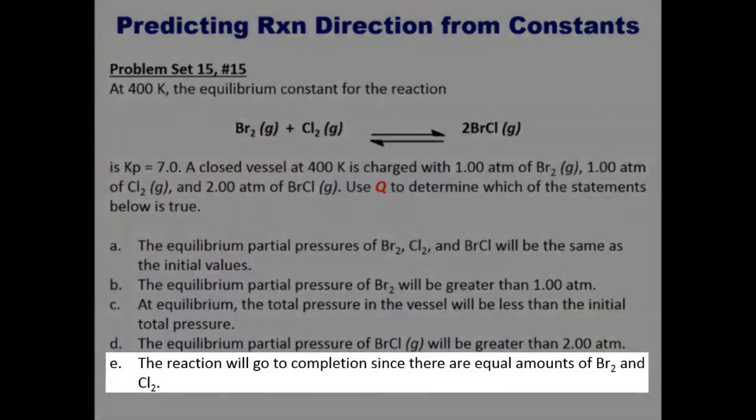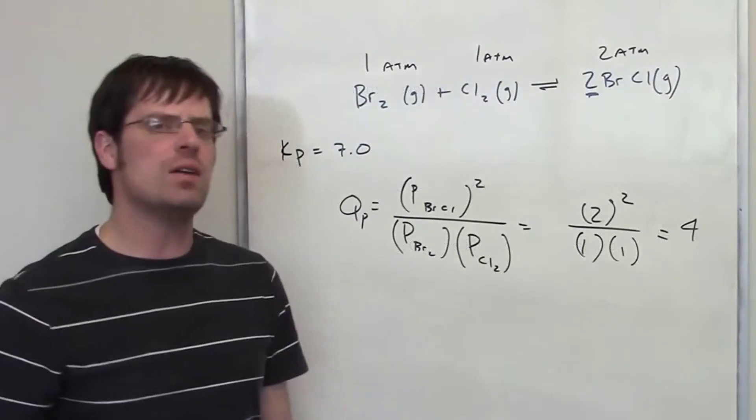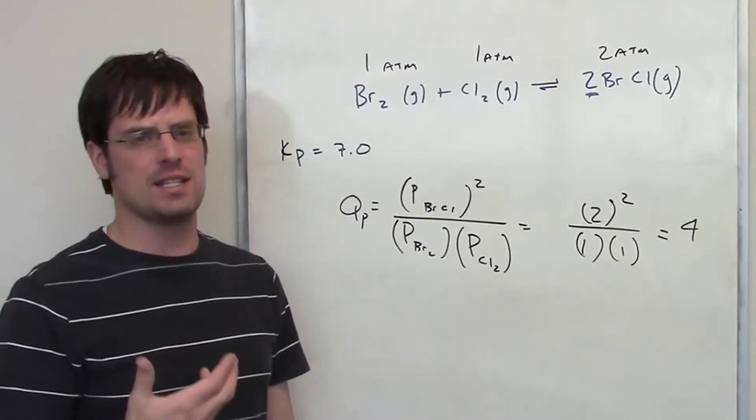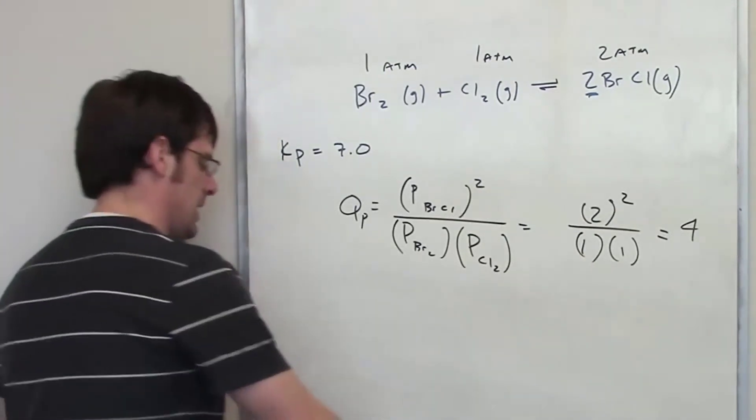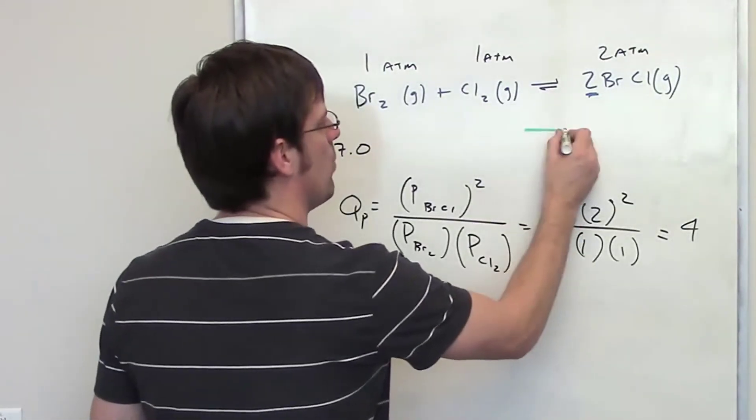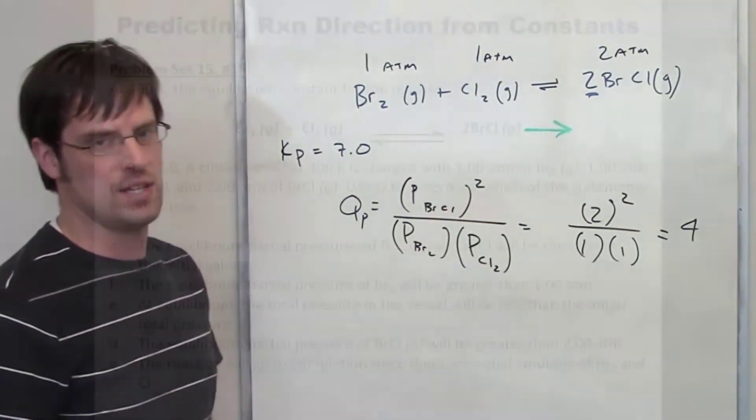Option E says the reaction will go to completion since there are equal amounts of Br2 and Cl2. That option is complete nonsense because this is an equilibrium reaction. There's no such thing as it going to completion. A completion reaction would be one in which we have a one-way arrow so we're talking about reactants converting completely to products which is not the case here.